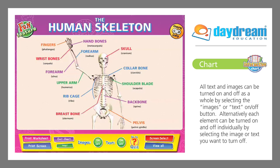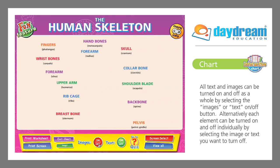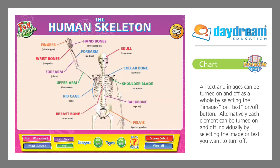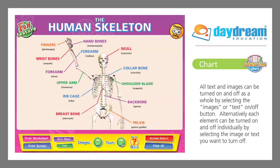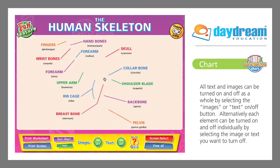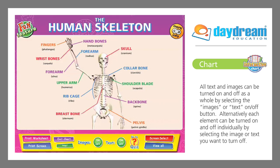All text and images can be turned on and off as a whole by selecting the Images or Text on/off button. Alternatively, each element can be turned on and off individually by selecting the image or text you want to turn off.